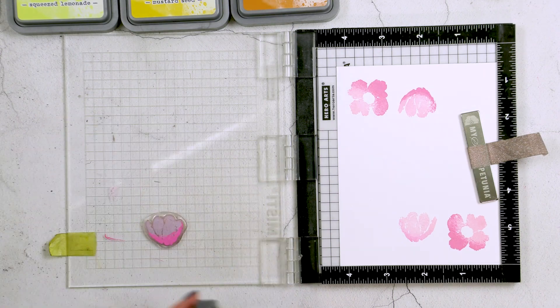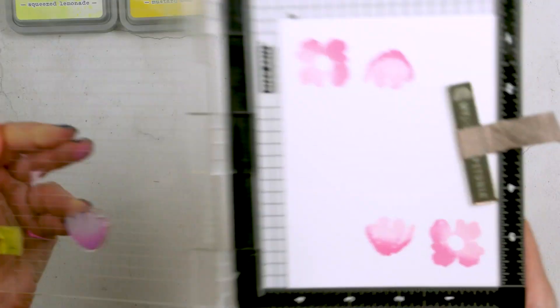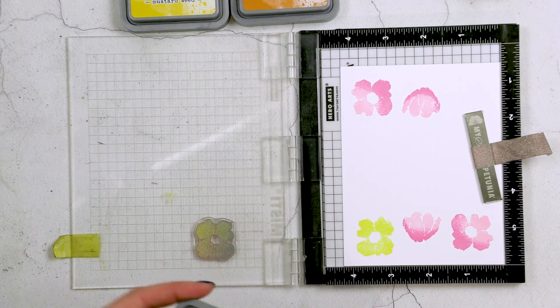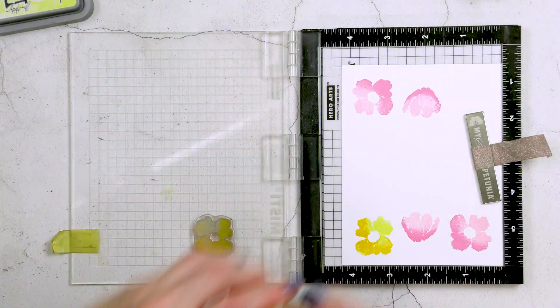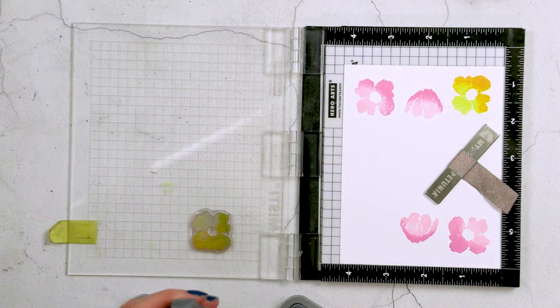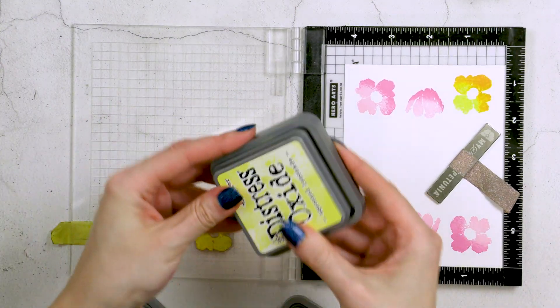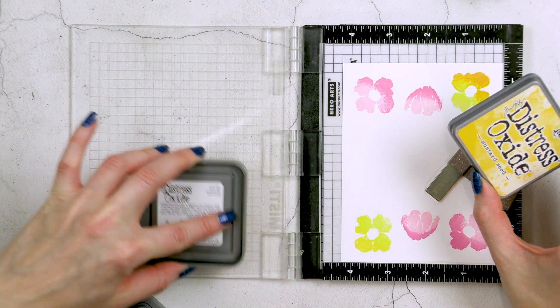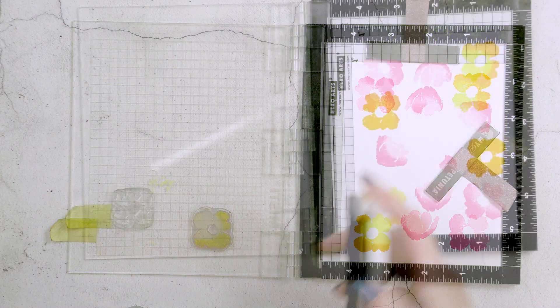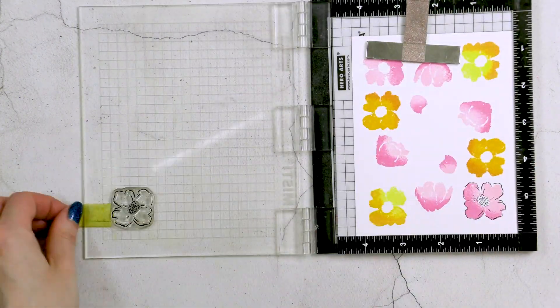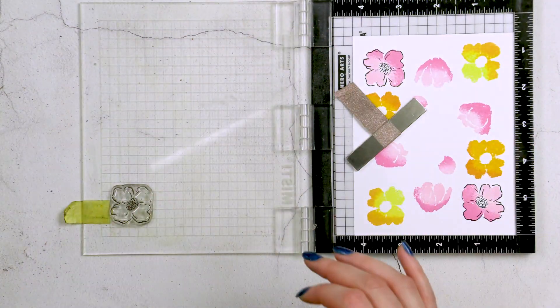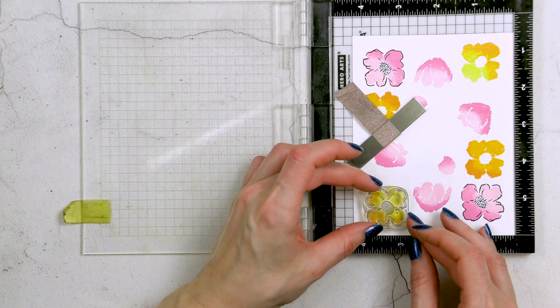The idea here is to ink the entire flower or the entire image, the entire solid layer using the lightest color of ink. Then to add interest and detail, use the slightly darker ink color, angle the ink pad and ink just a portion of that stamp to create some shading on one side of the flower. So just like that, it's very easy to do. All you need to do is angle the ink pad and if you feel you've added too much ink you can use your finger or maybe a cloth to wipe that excess ink off and you've instantly added some interest to an otherwise one layer flower.